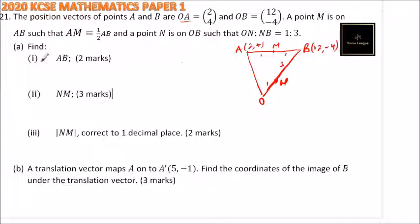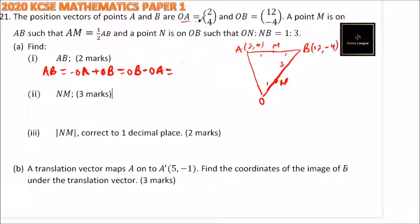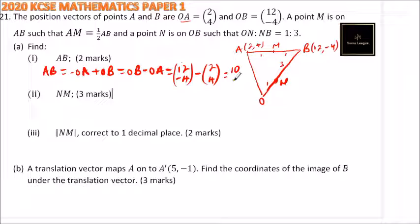So what is AB? We say AB equals minus OA plus OB, which equals OB minus OA. OB is (12, -4) and we subtract OA which is (2, 4). That gives us 12 minus 2 equals 10, and minus 4 minus 4 equals minus 8. So the column vector AB is (10, -8).